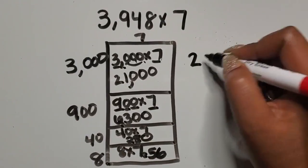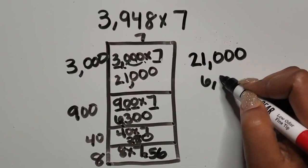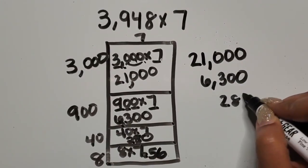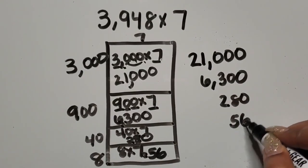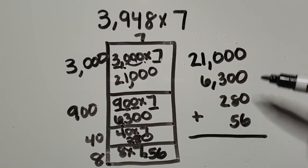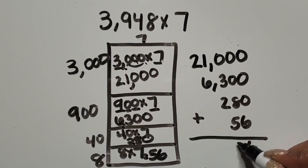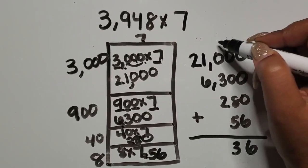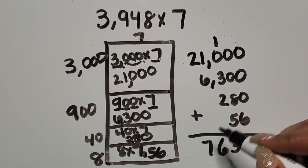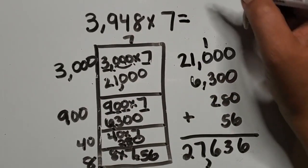Now we're going to have students take all the partial products and add them together on the side, lining them up based on their place value — ones with ones, tens with tens, hundreds with hundreds, thousands with thousands, and ten-thousands. In the ones place we have six. Then thirteen, five, six, seven, and two. Our product is twenty-seven thousand six hundred thirty-six.